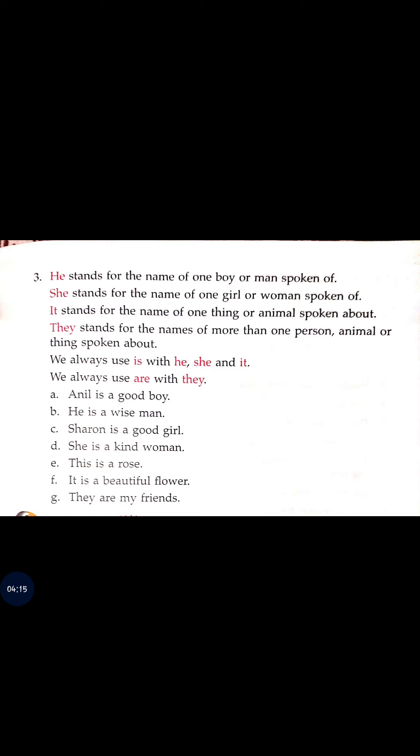'It' stands for the name of one thing or animal spoken about. 'They' stands for the names of more than one person, animal, or things spoken about. We always use 'is' with 'he,' 'she,' and 'it,' and we use 'are' with 'they' or 'we.'